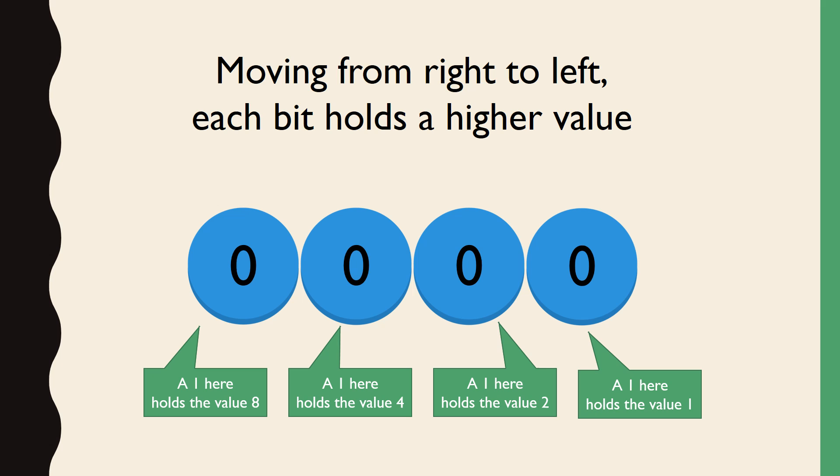It turns out, this structure would allow us to represent all possible positive integers. Negative numbers and floating point numbers are a topic for another video. This progression from right to left is simply powers of 2. From right to left, the place values of each bit are 2 to the 0, or 1, 2 to the 1, or 2, 2 to the 2, or 4, and 2 to the 3, or 8.